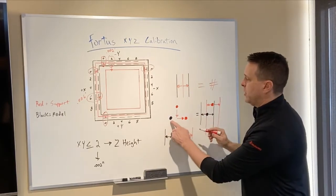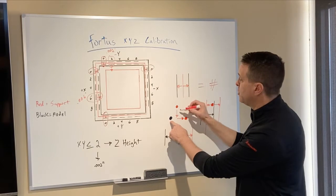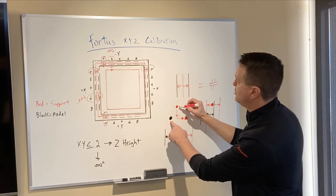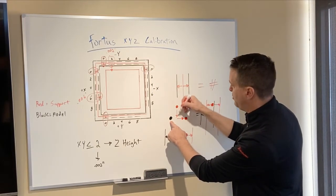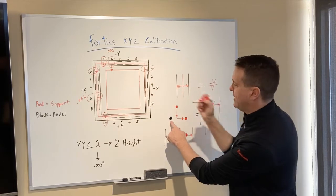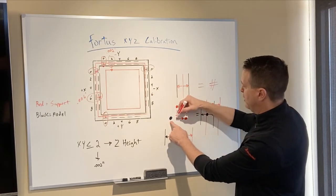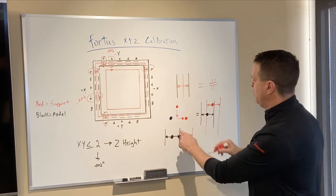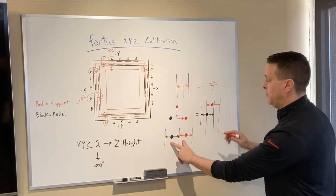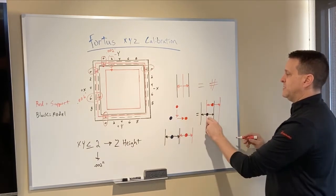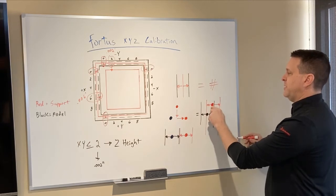If we look at this drawing, our fixed tip is the model. Currently, according to this, we are 2,000s too high. We need to pull it down. And we are 6,000s too close. We need to move it over. By doing that, we will end up with this. Because right now, what we have is this. Model tip is fixed. Support tip is up here.